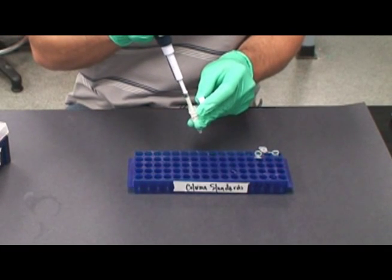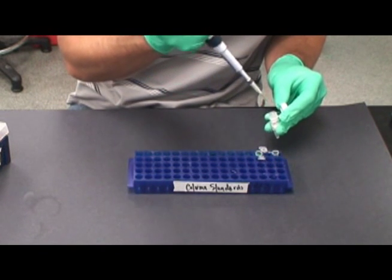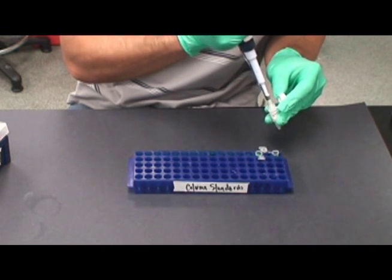First, add 4 microliters of Lambda DNA into both of the 0.5 milliliter microfuge tubes using a sterile micropipette tip.